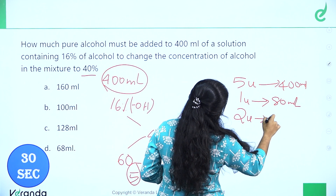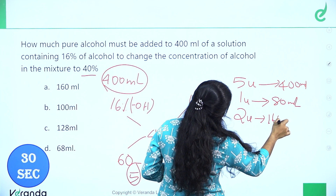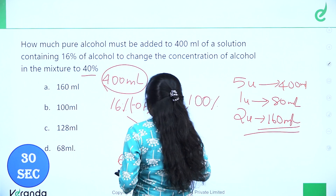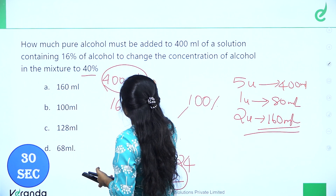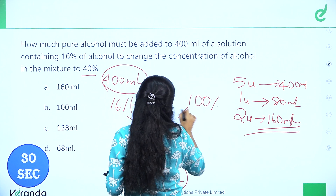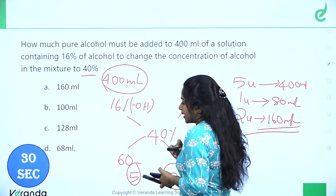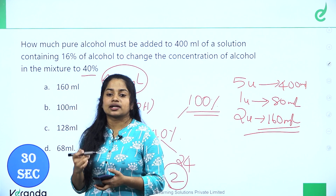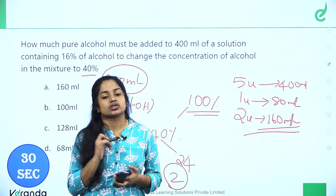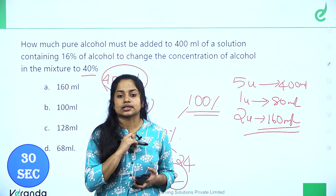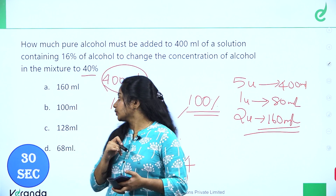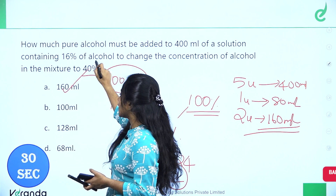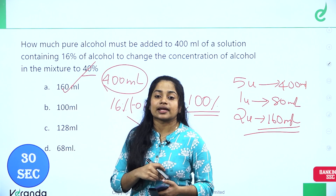So 5 units equals 400 ml, meaning 1 unit equals 80 ml. The pure alcohol to add is 2 units, which is 160 ml. So in this 400 ml solution we add 160 ml of 100% alcohol to get 40% concentration. Option A — 160 ml — is the correct answer.